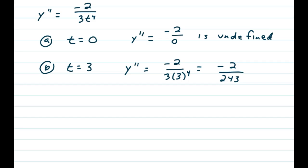t is equal to 3. You get negative 2 over 3 times 3 to the fourth, which turns out to be negative 2 over 243.